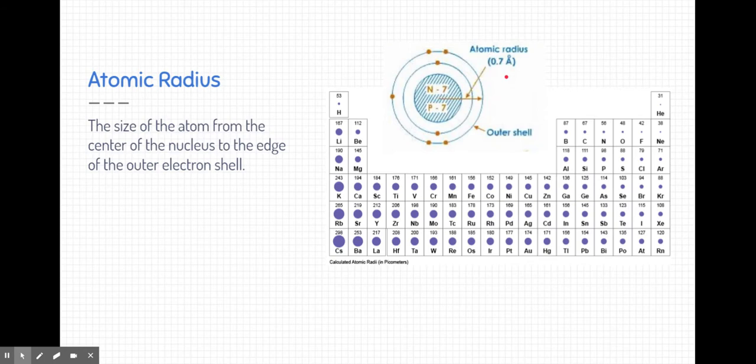But we're not going to get into the detail of specific numbers. We're just going to look at the general relative atomic radius. How do the atomic radiuses relate to each other based on their position on the periodic table?